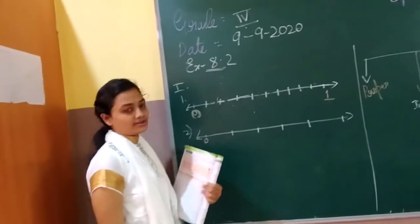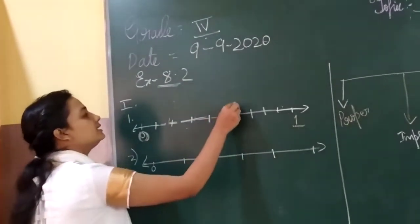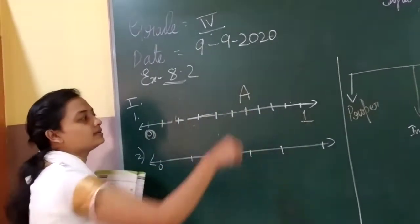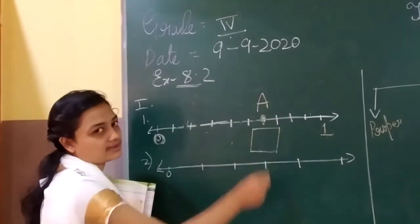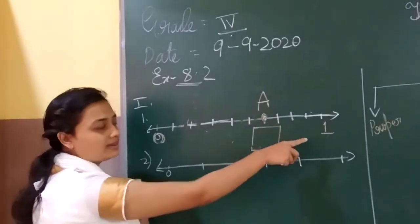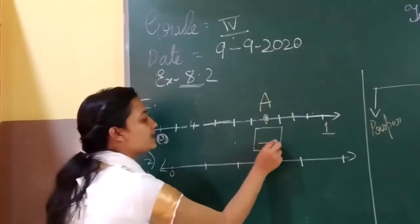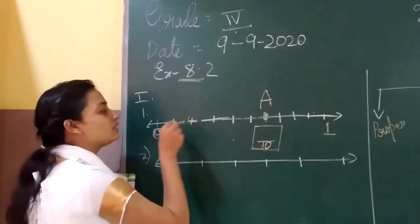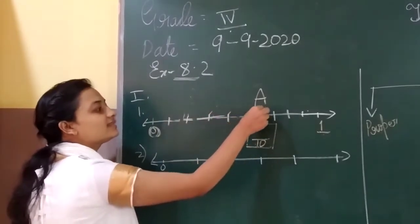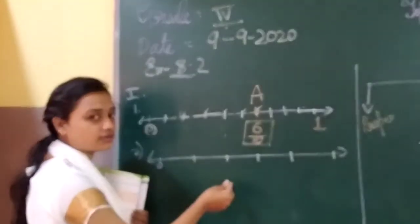In this exercise, they have given number lines divided into parts and they have given one letter. In the first one, I can see the letter A over this line. I should count and write what fraction this dot or line represents. I know it is divided into 10 parts: 1, 2, 3, 4, 5, 6, 7, 8, 9, 10. So my denominator will be 10. Now counting to the line — first, second, third, fourth, fifth, 6 — this is my sixth line. So my fraction will be 6 by 10. This is how you find a fraction on a number line.